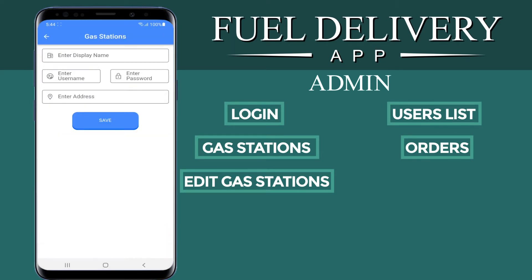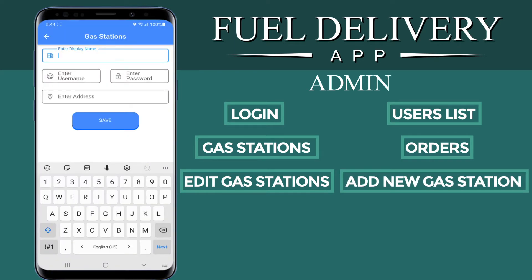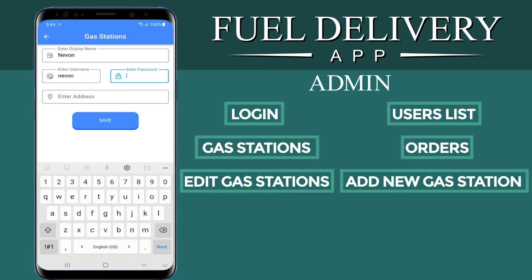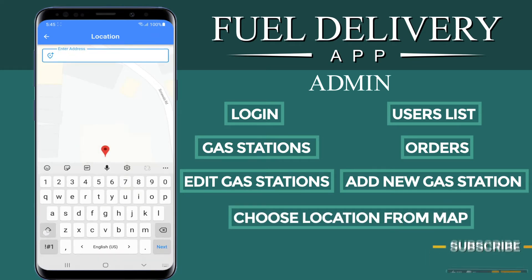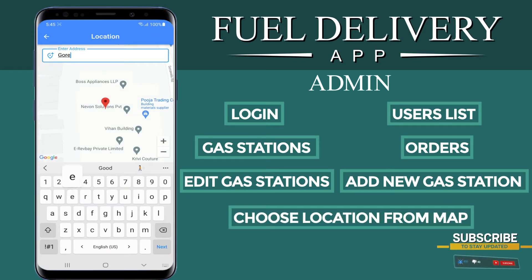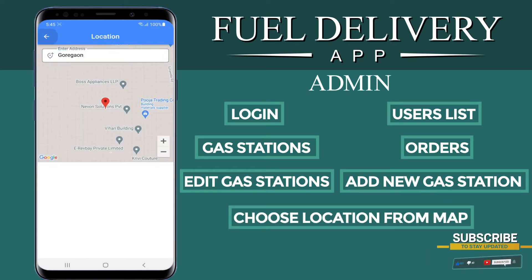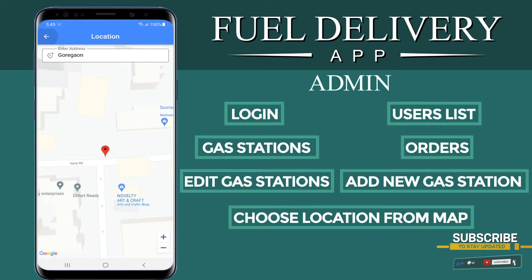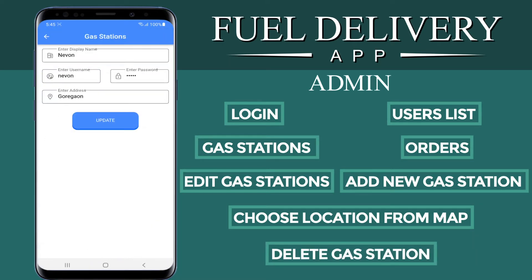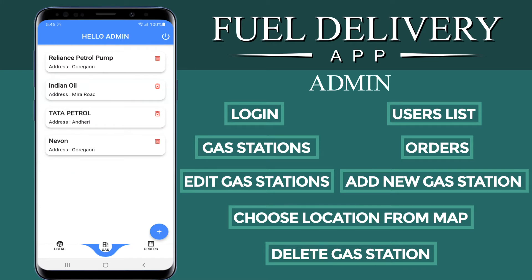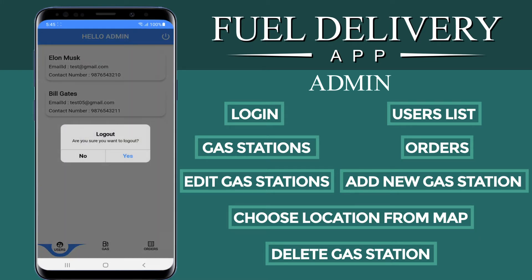Now let's add a new gas station into the system. We enter a username and password, then select the address on the map. Once all this is done, we can save the new gas station into the system. We can also delete a gas station when desired. Now let's log out from the admin panel.